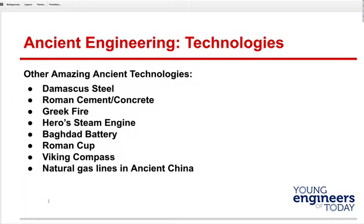In China, they made natural gas lines. They mined for salt and went down quite far — about 500 feet — using bamboo to make gas lines. They'd take the gas out while mining, ship it off, and burn it for light and energy — basically what we're doing today.